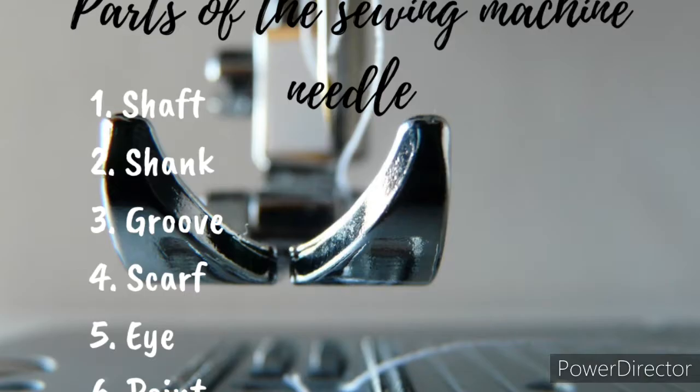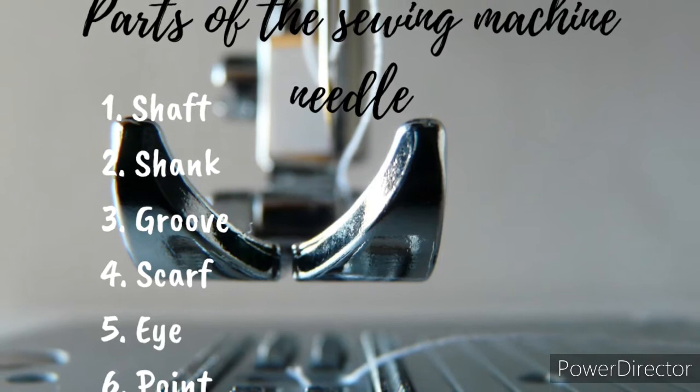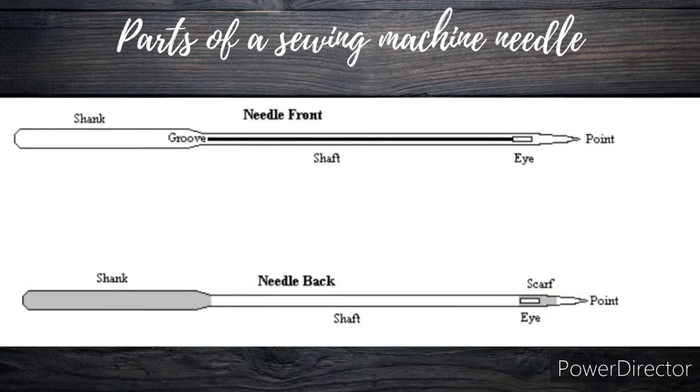The parts of the sewing machine needle are the shaft, the shank, the groove, the scarf, the eye, and the point. This is a diagram of the sewing machine needle.